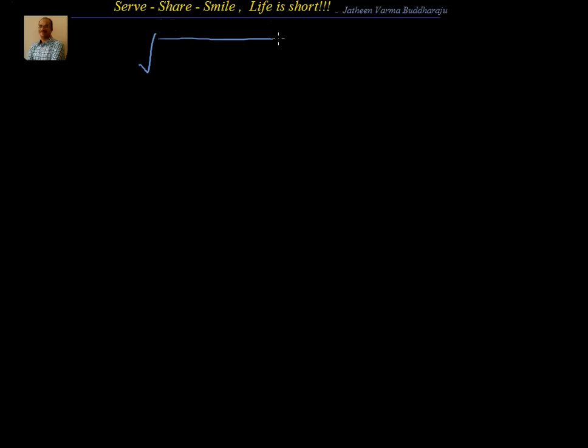Hello friends, welcome back, hearty welcome to you. In this session, let's look at how to find out the square root of a surd which is of the form a plus root b. Suppose we have to find out the square root of 7 plus 2 root 12.